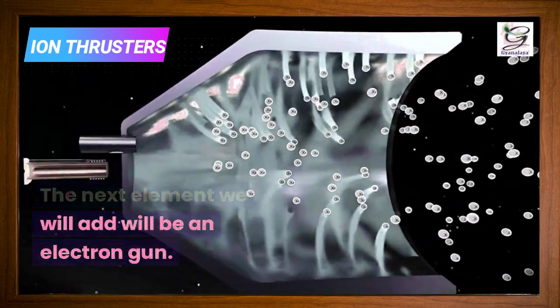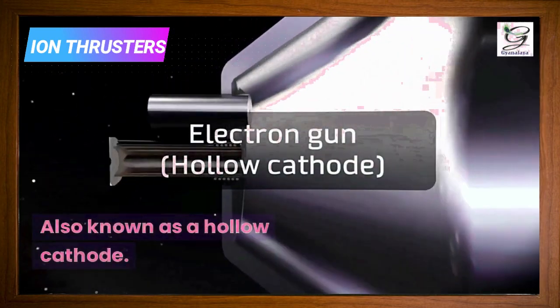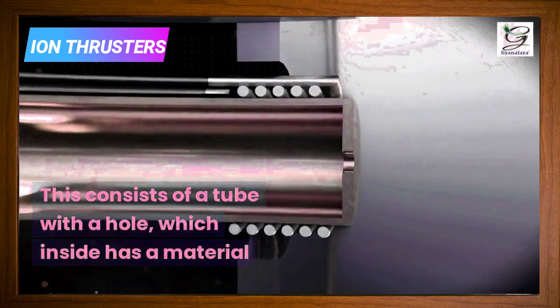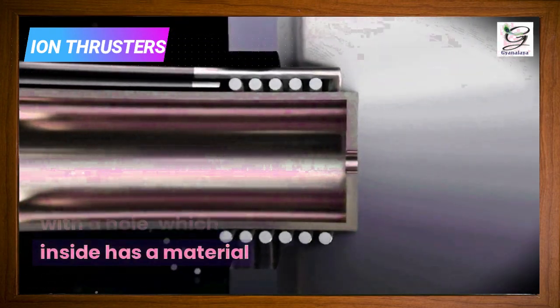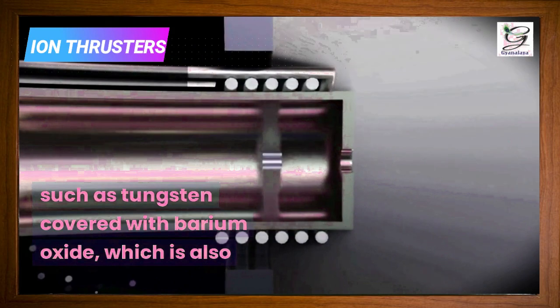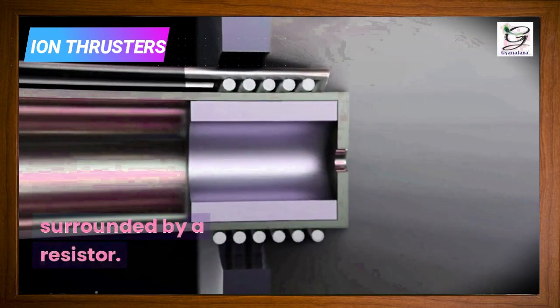The next element we will add will be an electron gun, also known as a hollow cathode. This consists of a tube with a hole, which inside has a material such as tungsten covered with barium oxide, which is also surrounded by a resistor.